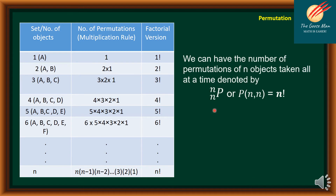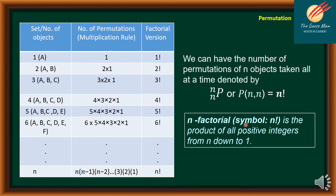So the number of permutations of n objects taken all at a time, denoted by nPn, is equal to n factorial. The n factorial symbol means the product of all positive integers from n down to 1. For example, if we have six objects, that is 6 times 5 times 4 times 3 times 2 times 1.